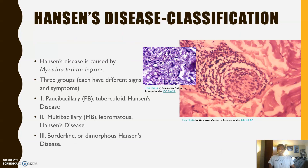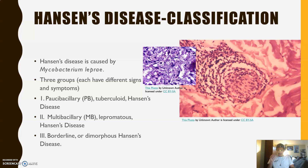So Hansen's disease classification. The causative agent is Mycobacterium leprae. There are three different subgroups of this disease, each with different signs and symptoms: paucibacillary tuberculoid Hansen's disease, multibacillary lepromatous Hansen's disease, and borderline or dimorphous Hansen's disease.